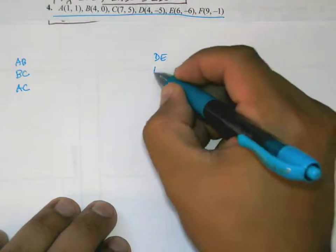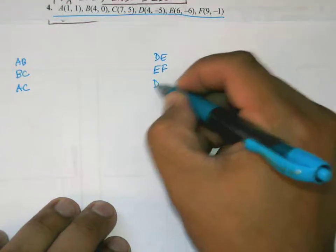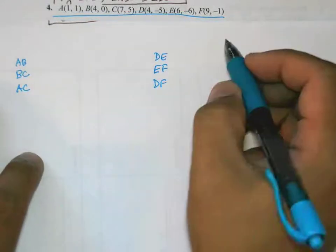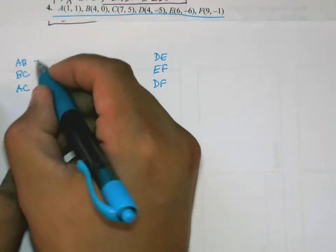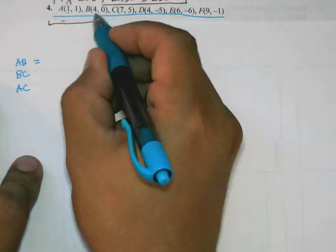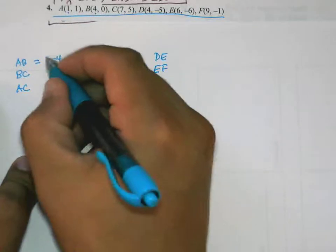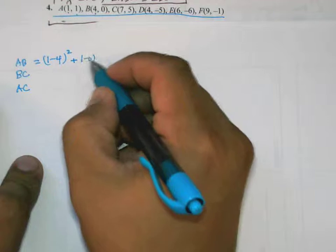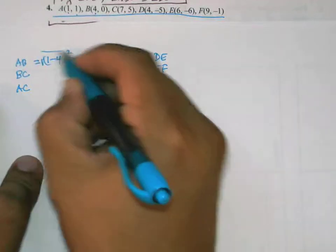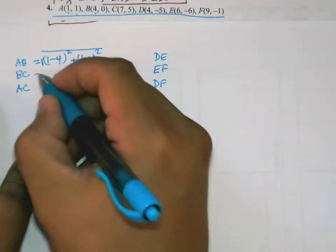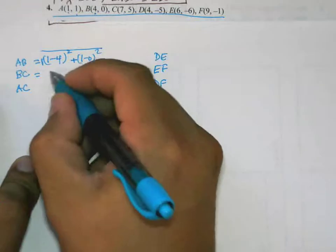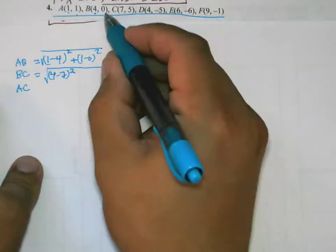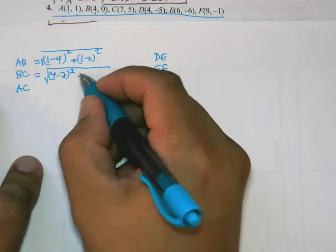I'm going to do something a little bit different. Let's find AB: √[(1-4)² + (1-0)²]. BC is √[(4-7)² + (0-5)²].